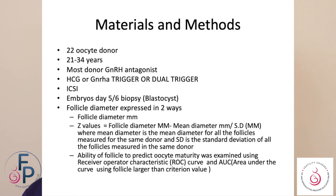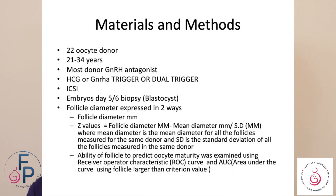It's a very small study with 22 oocyte donors, most of them on the GnRH antagonist protocol. HCG, GnRH analog trigger, or a dual trigger was given. ICSI was done, and embryos were biopsied on day five and day six at the blastocyst stage. Follicle diameter was expressed in two ways: in millimeter size, and as Z-values by taking follicle diameter in millimeters minus the mean diameter divided by the standard deviation.